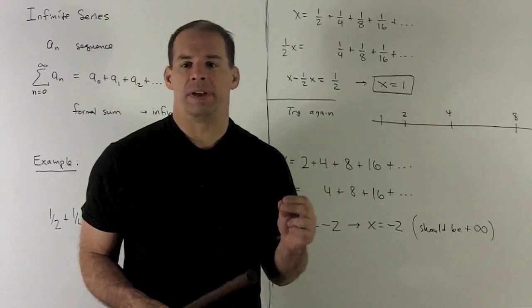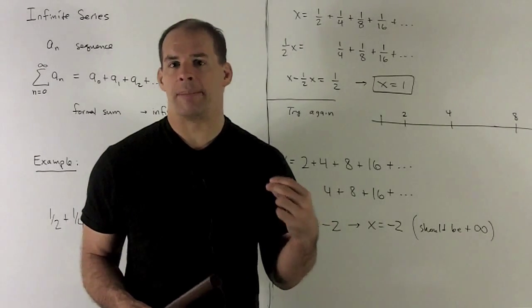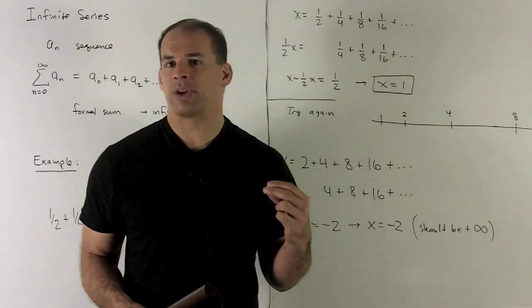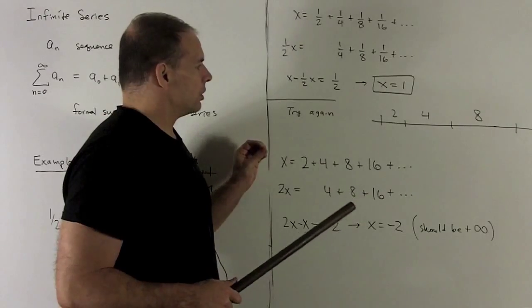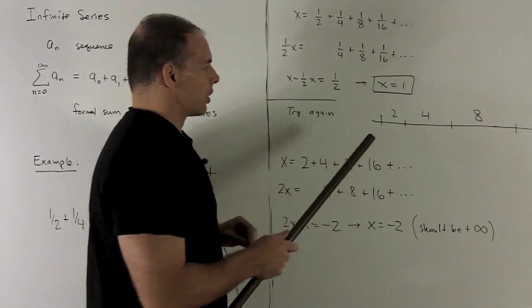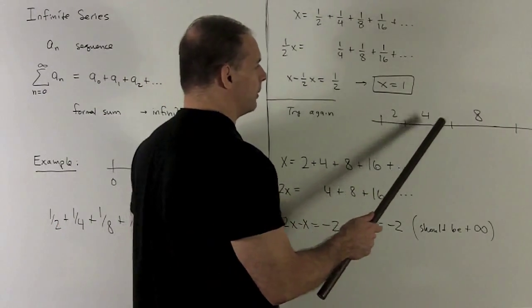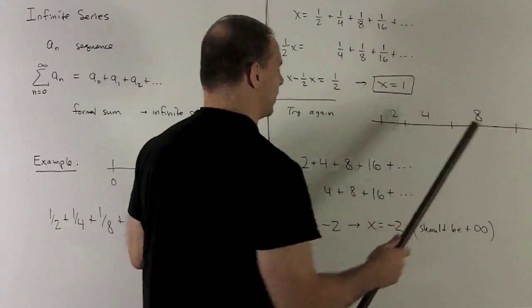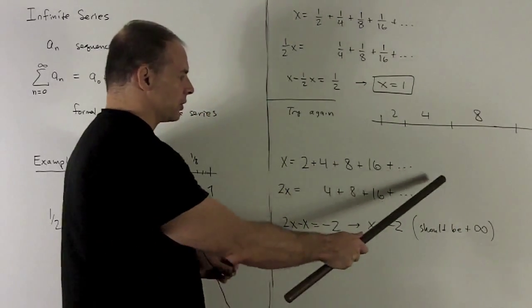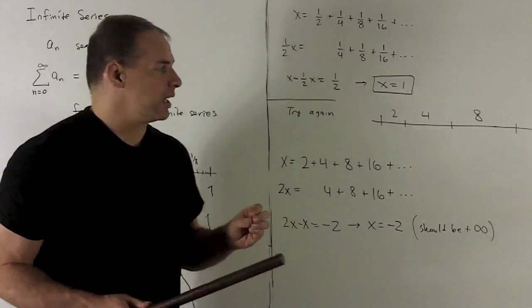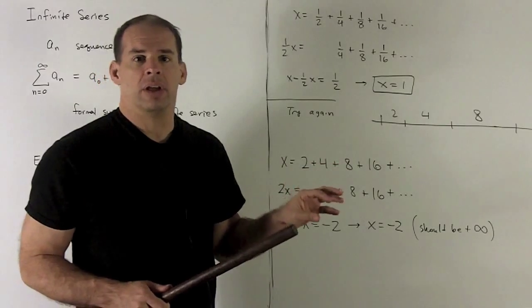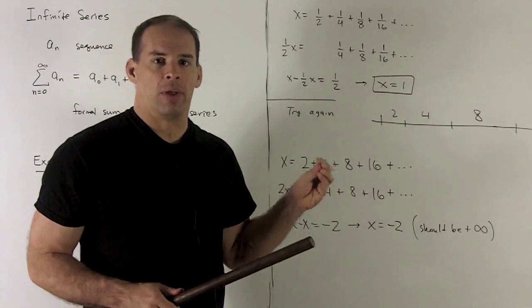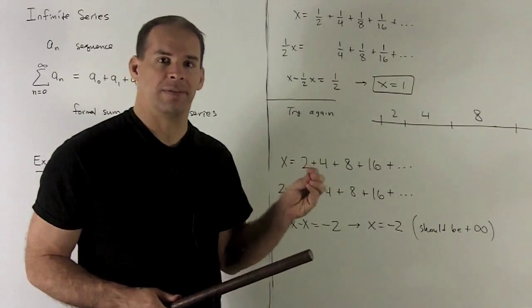Now, that might feel good enough to stop there, but let's use the same procedure on something else to see if it can produce garbage if we're not careful. So let's take a look at this. We'll start with 2. I'm going to add 4 to it. I'm going to add 8 to that. I'm going to add 16 to that. Here's the series that goes with this. We can see, just physically, adding all these up is going to keep growing without bound. So the limit, as I sum all those up, is going to go out to plus infinity.